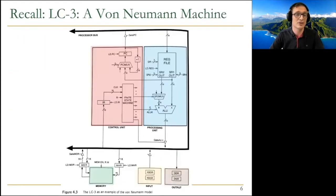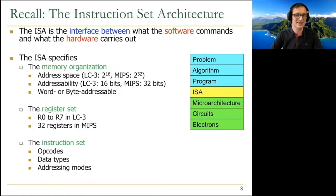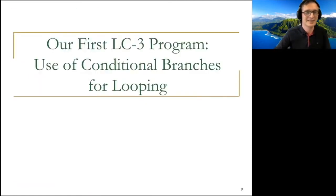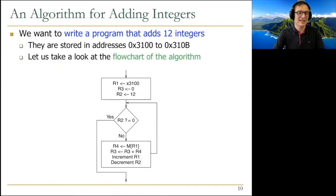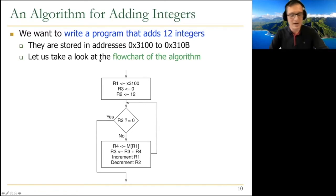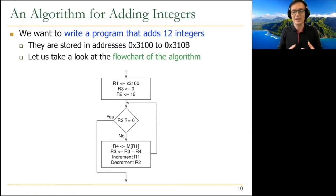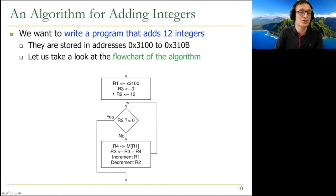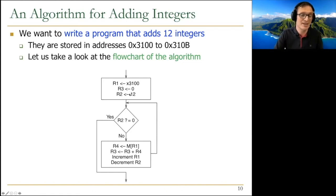We're still talking about the von Neumann model, von Neumann machine, and instruction cycle — things you should keep in the back of your mind. We're going to build our first LC3 program using conditional branches for looping. The program works with 12 integers stored in addresses hex 3100 to hex 310B. The way you go about solving a problem in computers is to first translate it to an algorithm, and we create a flowchart. This flowchart is very low level because we're writing in assembly.